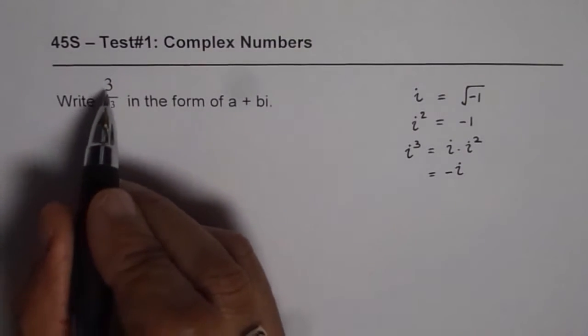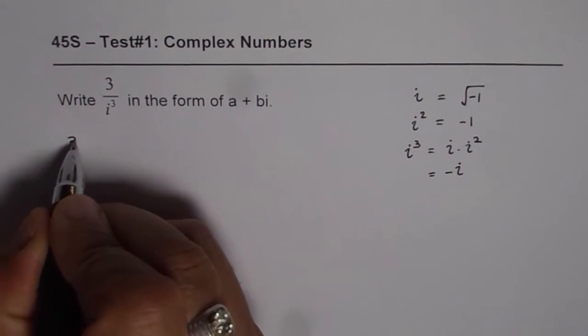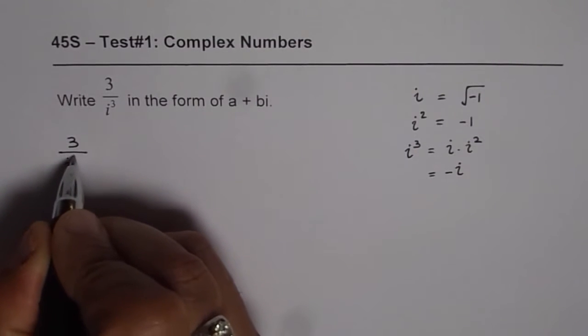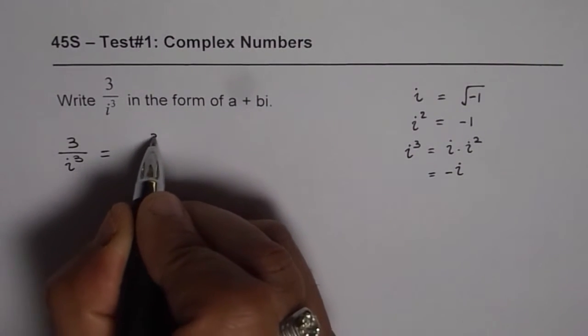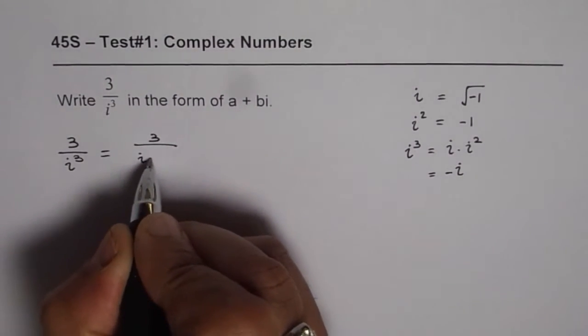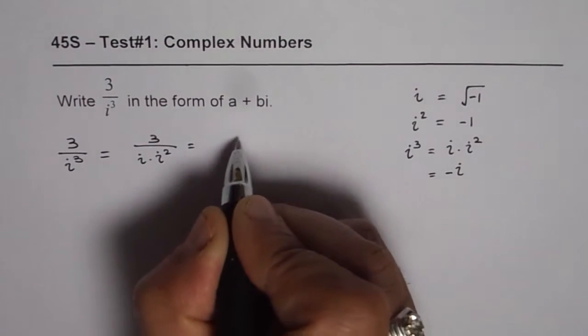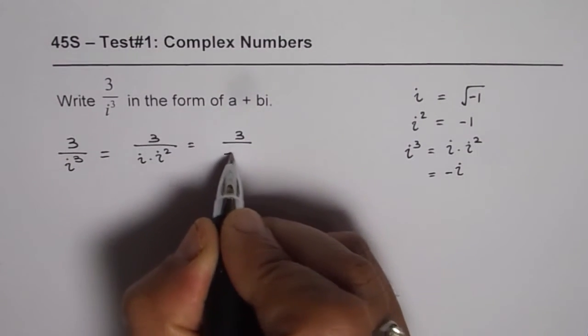So we will start with the given expression, which is 3 over i cube. So I can write this as 3 over i times i square, which is indeed 3 over minus i.